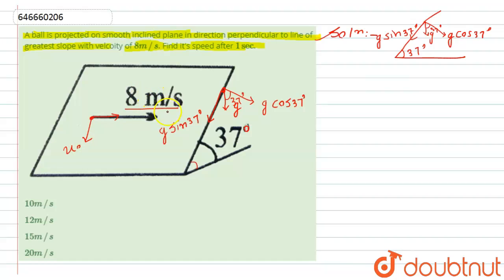The initial velocity perpendicular to the line of greatest slope is 8 meters per second. After one second, we need the speed. The ball undergoes projectile-like motion on the inclined plane. The velocity in the horizontal direction remains 8 m/s since there is no acceleration in that direction, but the velocity in the vertical direction changes due to the component g sin 37°.